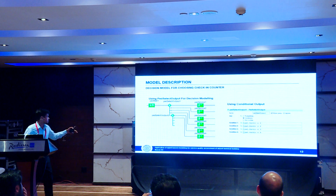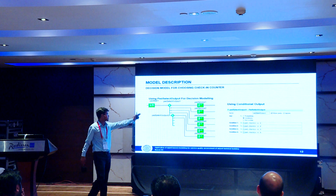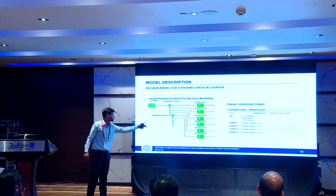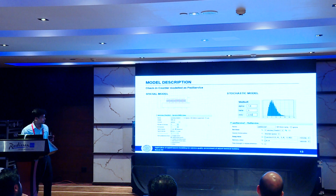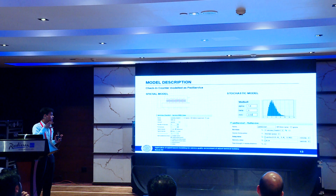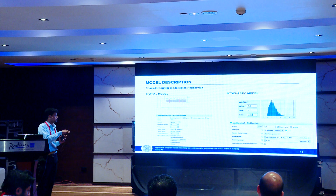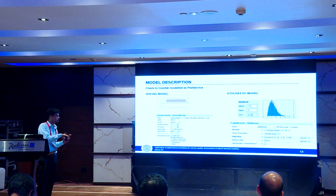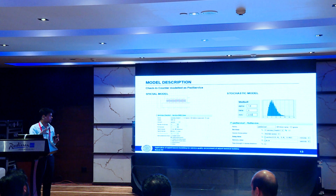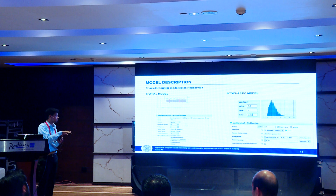The stochastic modeling — pad service one, service two — is based on field study data. We assign each passenger how much time they have to take to complete a particular activity, and that distribution follows a variable distribution.